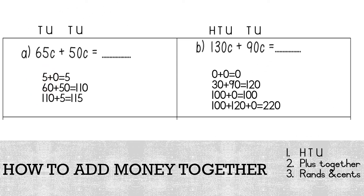Our first question, number A, is 65 cents plus 50 cents. Our first step is to add the hundreds, tens and units. The unit of 65 is 5 and the unit of 50 is 0, so 5 plus 0 equals 5. Then we must add the tens: 60 plus 50 equals 110. Then we add our answers together: 110 plus 5 equals 115 cents.